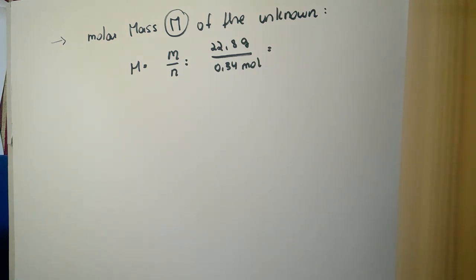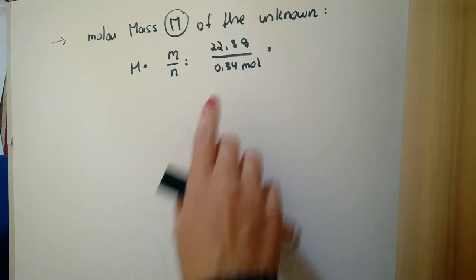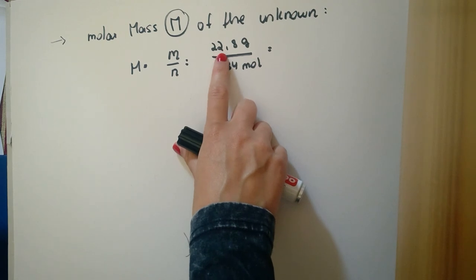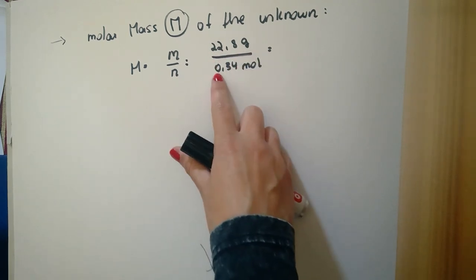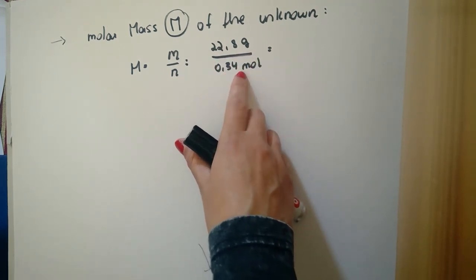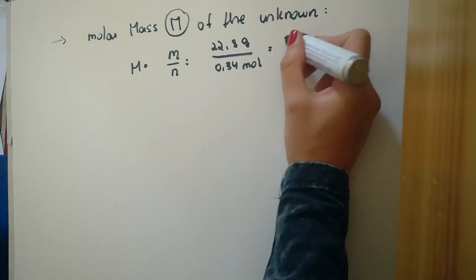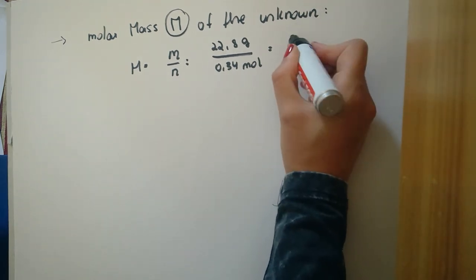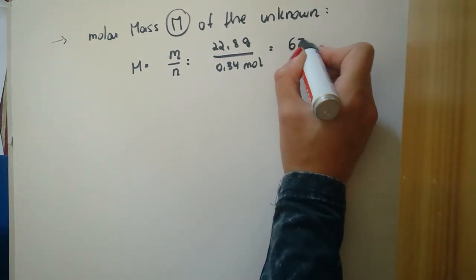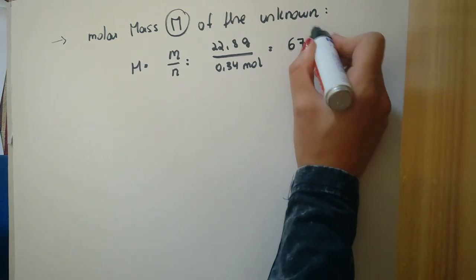The molar mass is the mass of the unknown divided by the amount of moles of the unknown. This is 22.8 g divided by 0.34 mol. The result is 67 g per mol.